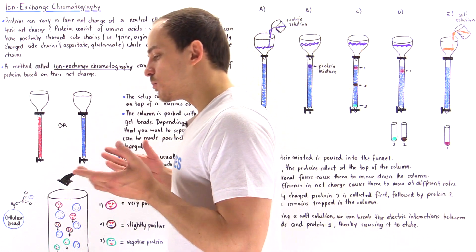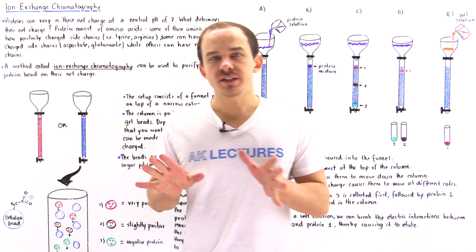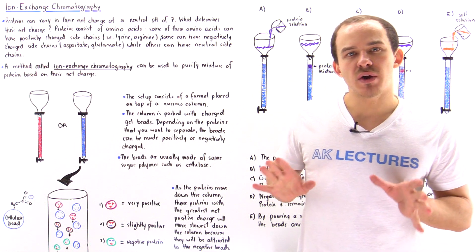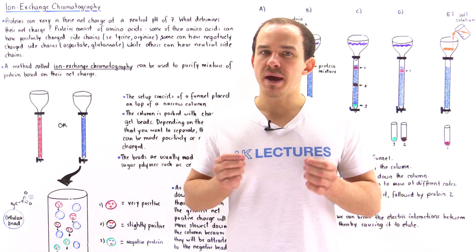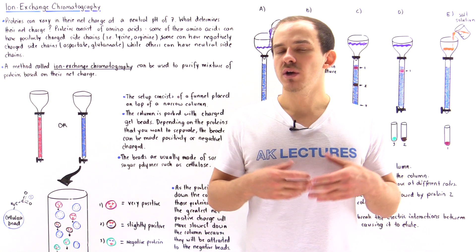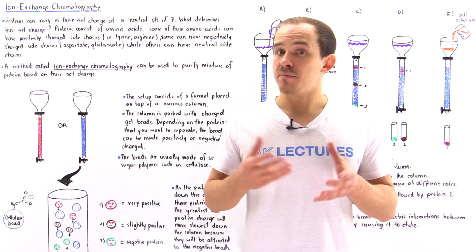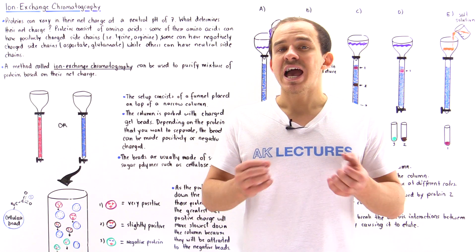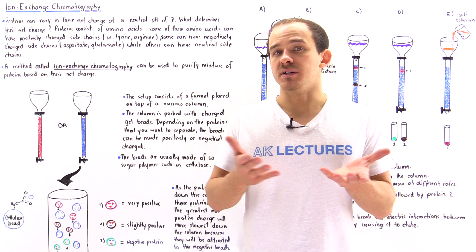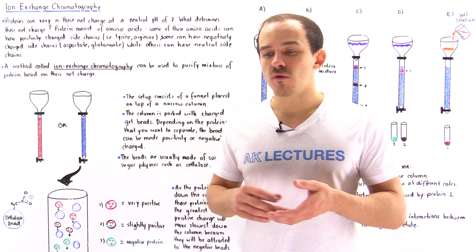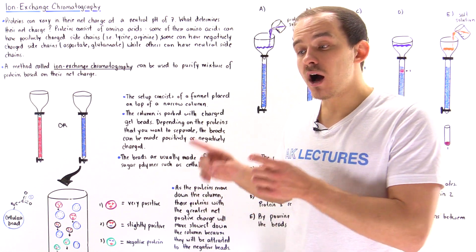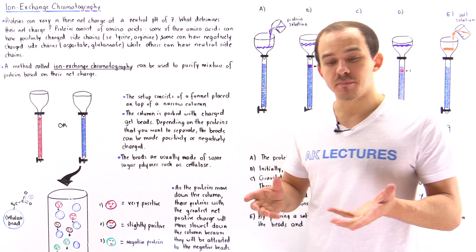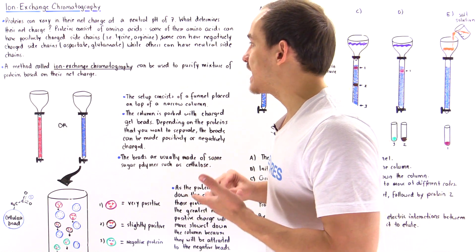Remember, proteins are composed of 20 different types of amino acids, and these different types of amino acids differ from one another based on their side chain group. Some of these side chain groups have a positive charge, such as lysine and arginine, while others have a neutral charge, for example glycine and valine. And yet other amino acids have a full negative charge, for example glutamate and aspartate.